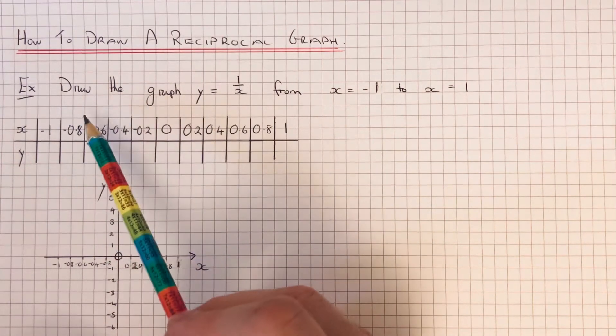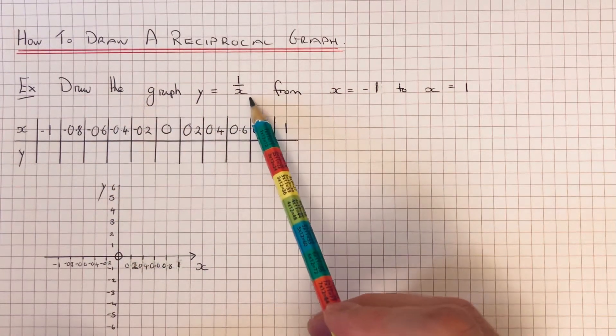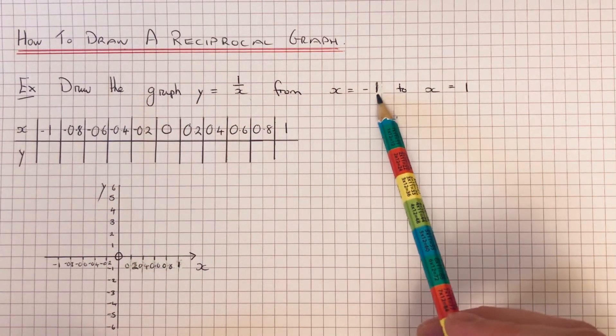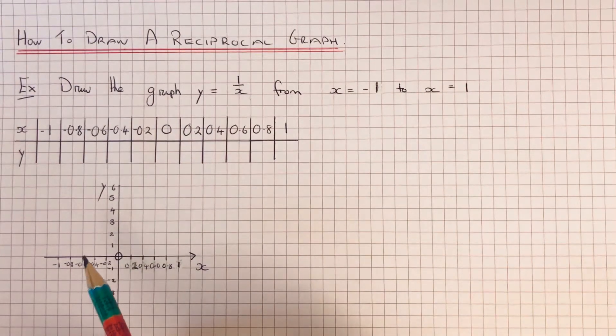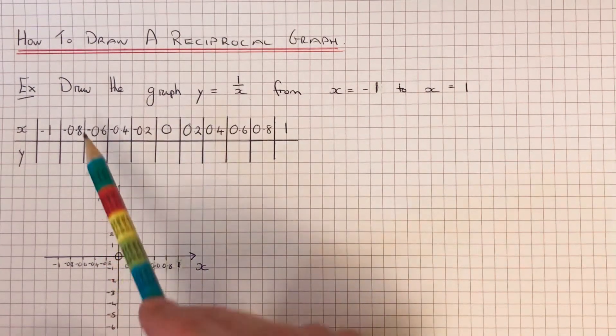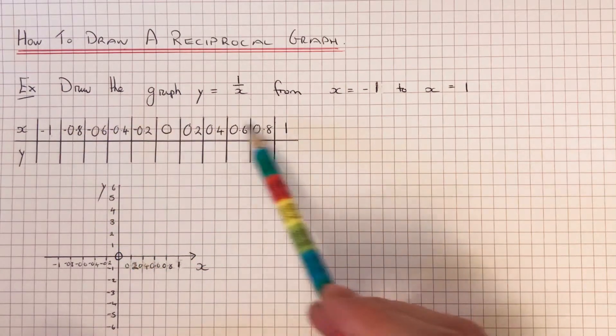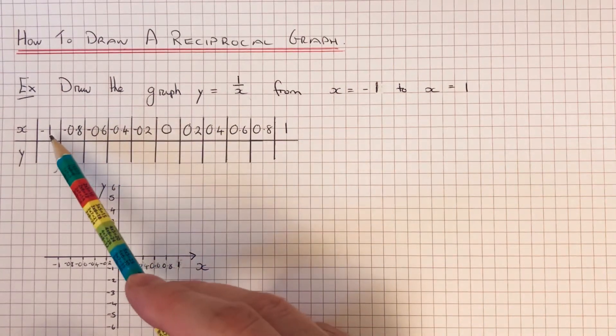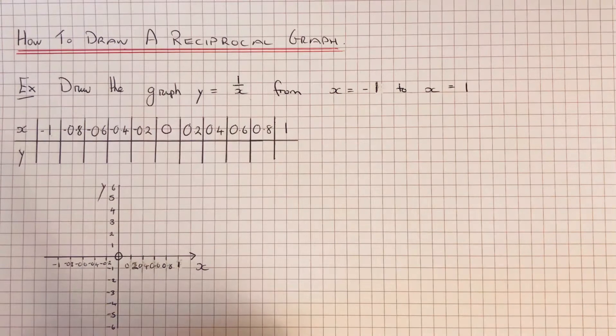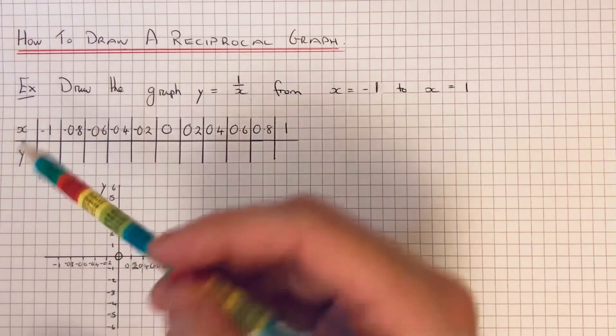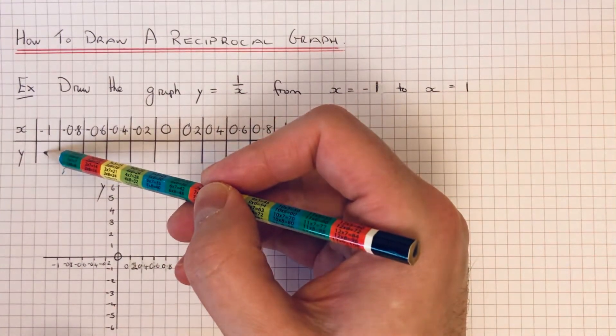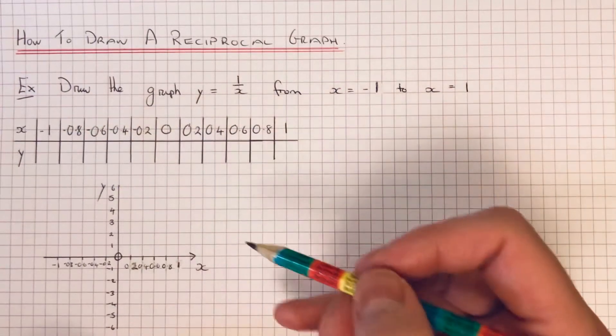So let's have a look at the example here. We've got to draw the graph y equals 1 over x from x equals minus 1 to x equals 1. You can see our table of values goes from minus 1 to plus 1 and it's going up in a step size of 0.2. So let's work out our first y coordinate when x is minus 1.